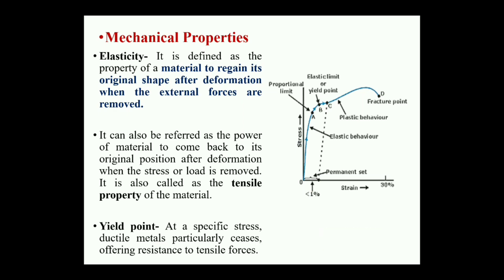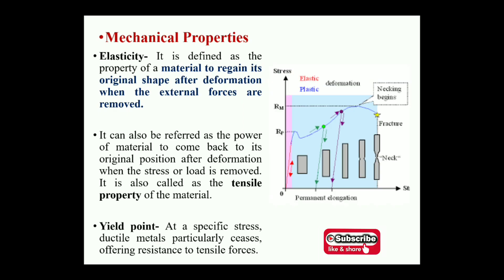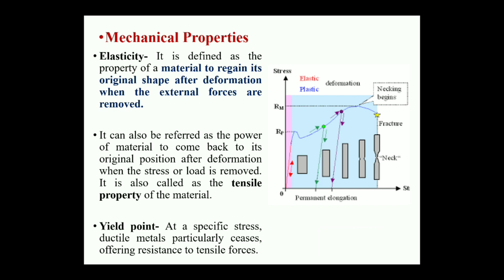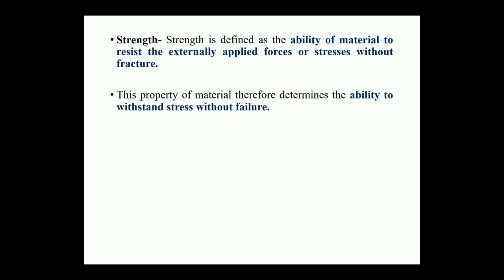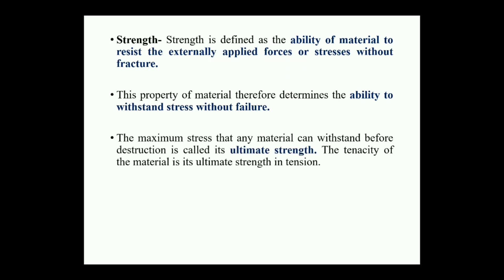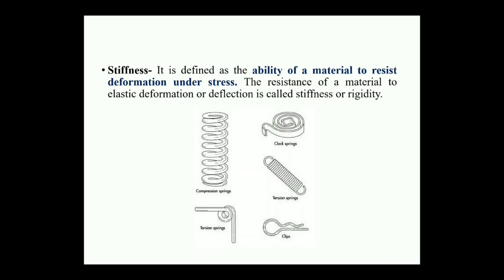After the yield point, the material enters plastic behavior — plasticity means permanent change in shape and size of the component. At point D, after plasticity, it converts into fracture — separation of the body into two or more parts. All ductile materials first elastically deform, then cross the yield point, then enter the plastic region, and after further stress increase, reach the fracture point. Strength is the ability of the material to resist externally applied forces without fracture. The maximum stress a material can withstand before destruction is called its ultimate strength. Stiffness is the ability of the material to resist deformation under stress.